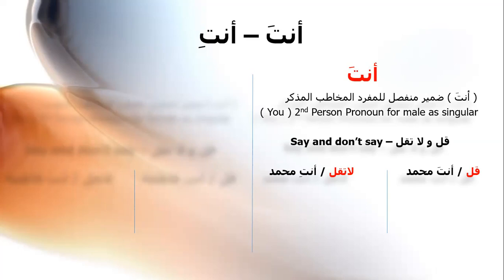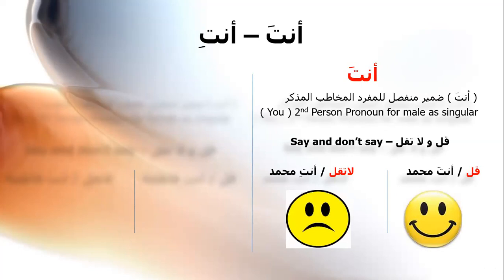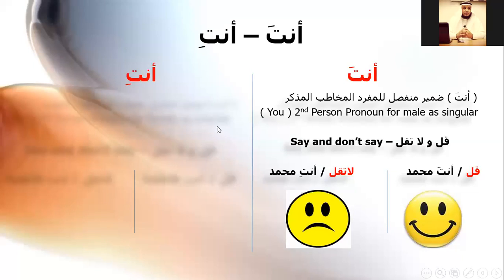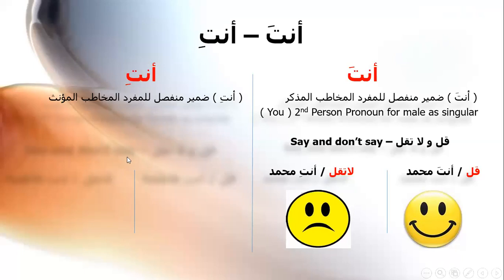For example: أنت محمد — what is the problem when I use أنت محمد? Here it is wrong. Or أنت فاطمة — فاطمة is female, so it should be أنتِ فاطمة. We have two faces: a happy face when you say أنتِ فاطمة correctly, and a sad face when you use the wrong form أنت.